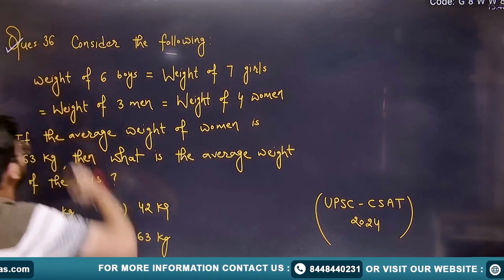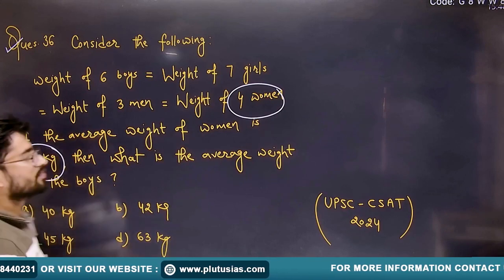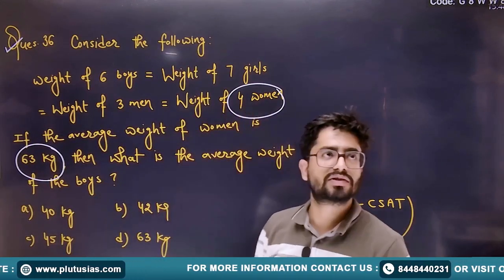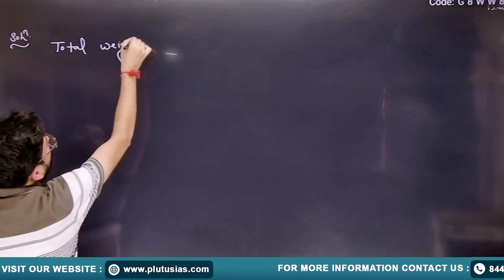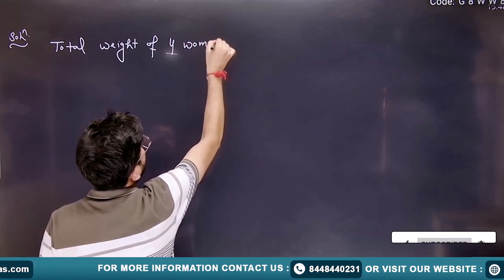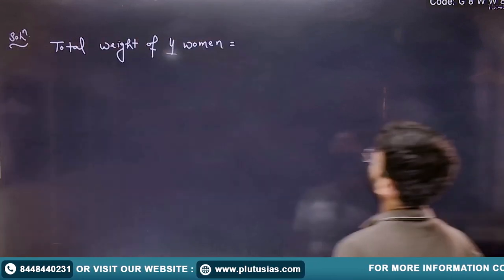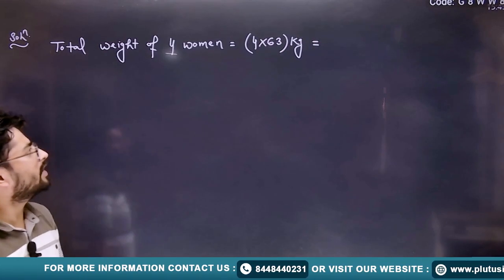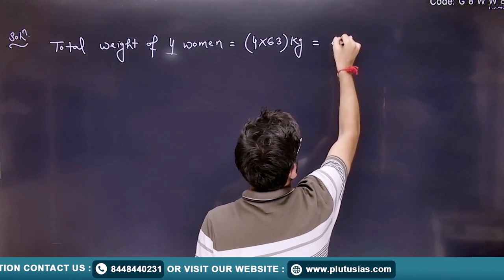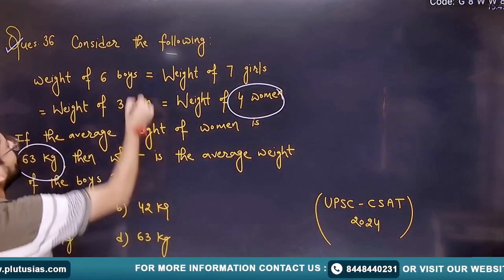Let's start. The total number of women is 4, and we are given the average weight of women, which is 63 kg. So we can find the total weight of these 4 women. Total weight equals average weight multiplied by number of women, which is 4 × 63 = 252 kg. That is the weight of 4 women, and we know this weight is equal to the weight of 6 boys.